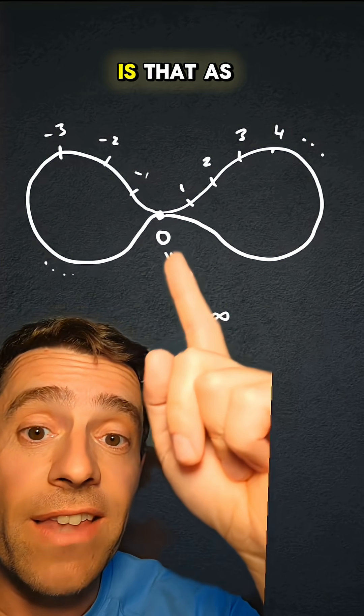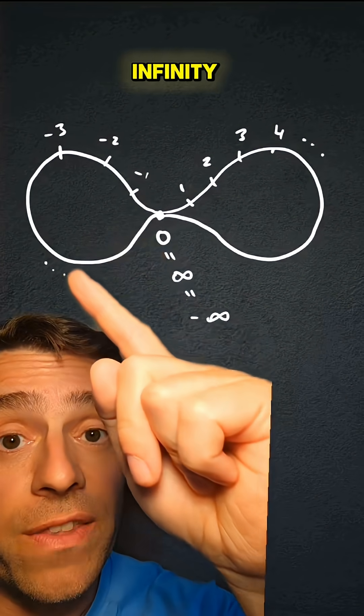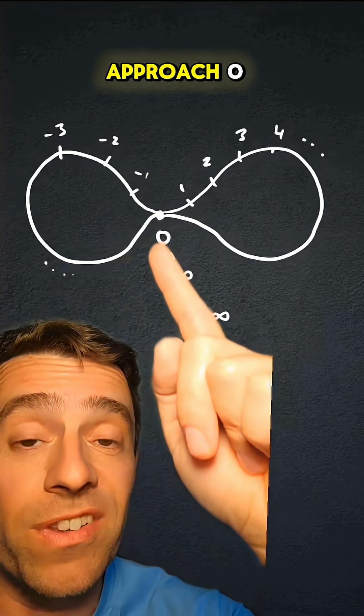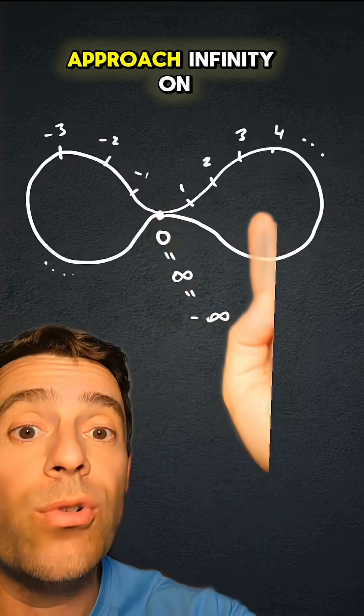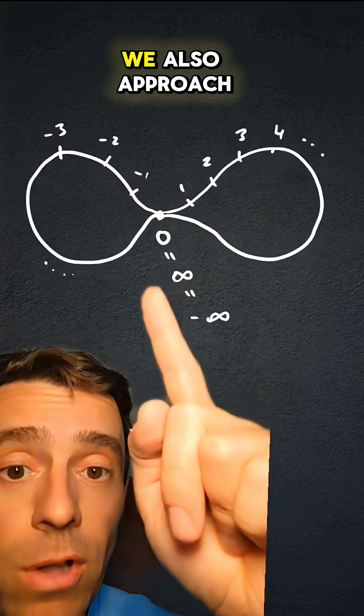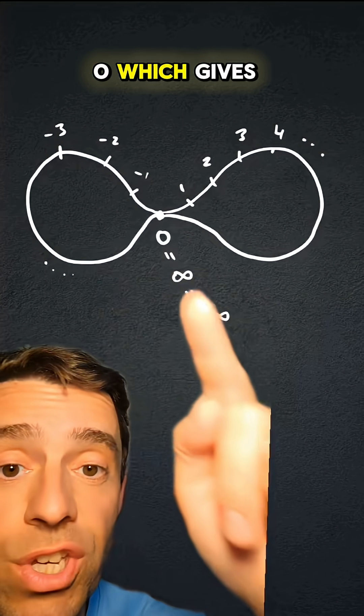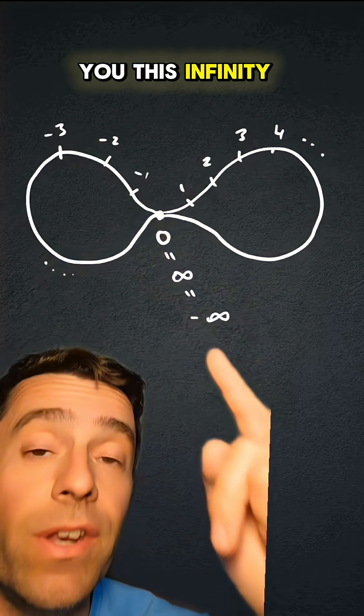And then what we would get is that as we approach minus infinity in the real line, we also approach zero, and when we approach infinity on the real line, we also approach zero, which gives you this infinity pattern.